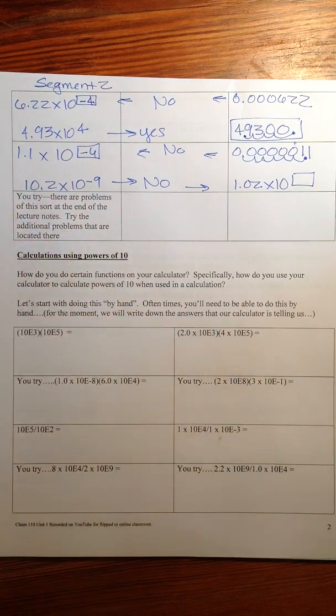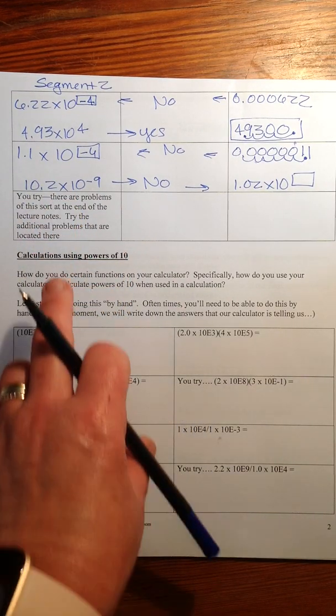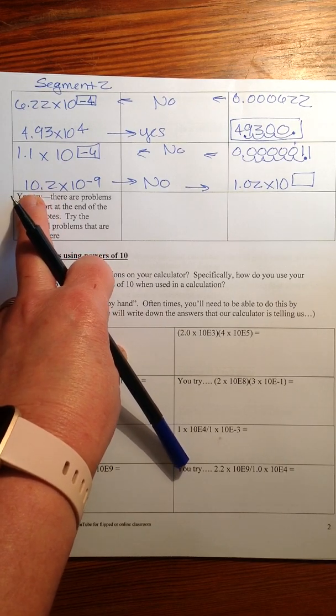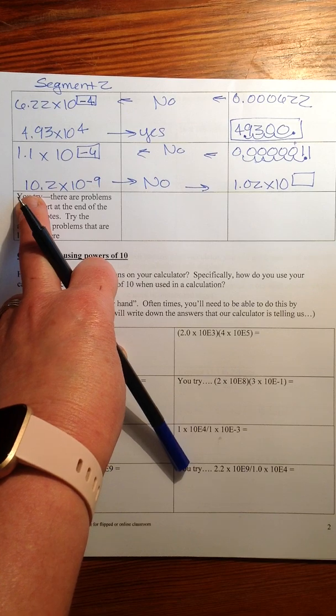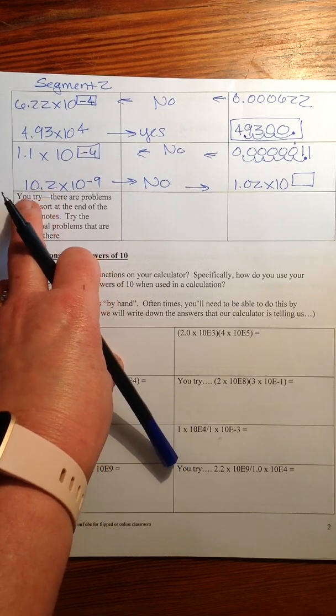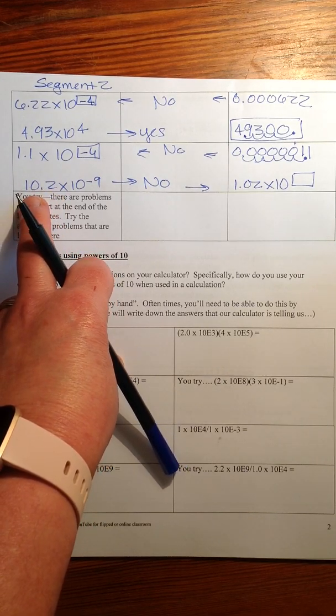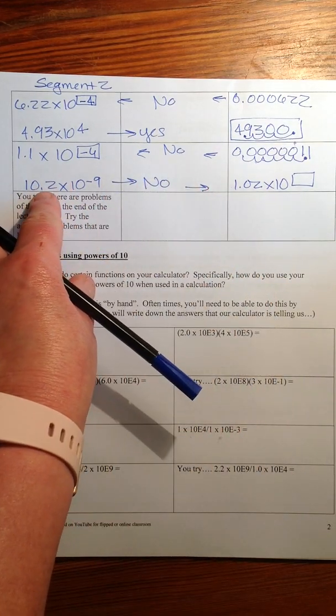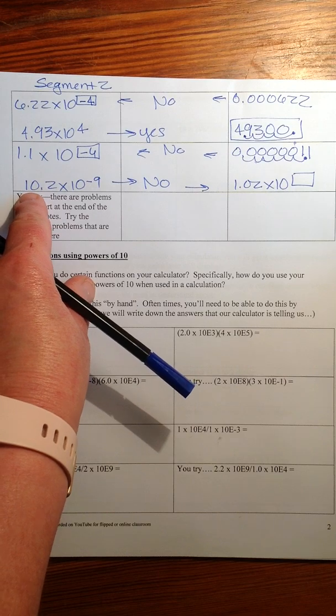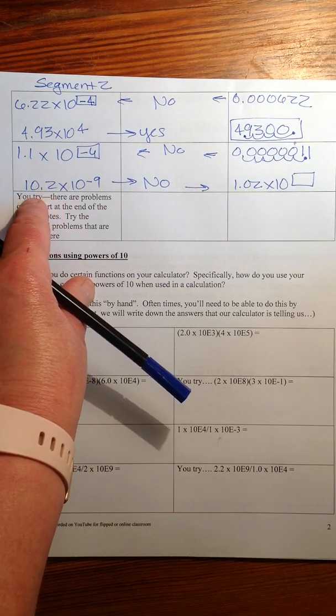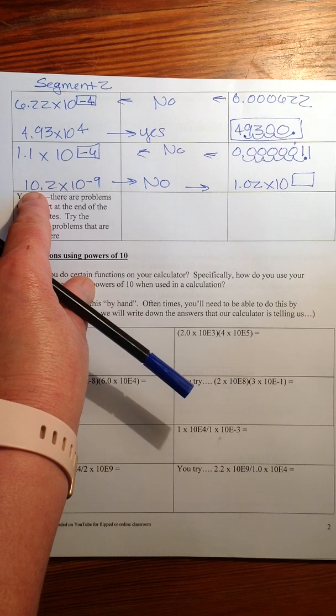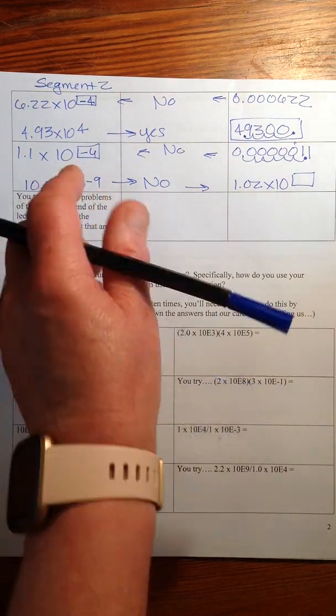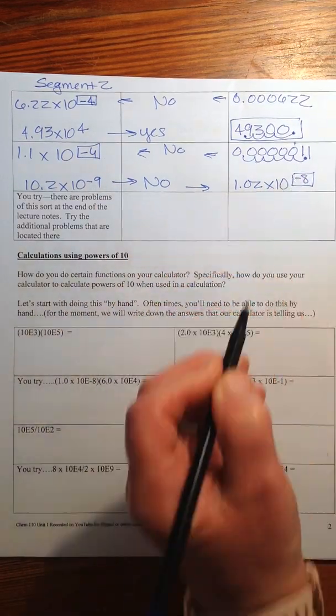Now this one is not meant to be tricky, but you see this sometimes. The 10.2 means you have another power of 10 here, which means you need to move the decimal, so to speak. In other words, you're factoring out a power of 10. So when you move this to the left one place, you're making this one power of 10 smaller. So you have to make this one one power of 10 bigger and that becomes a minus eight.